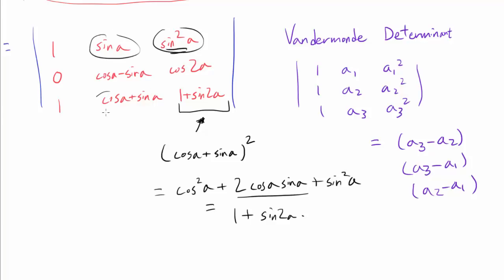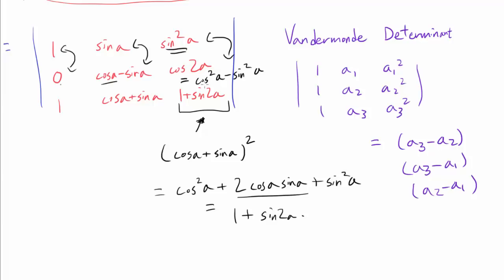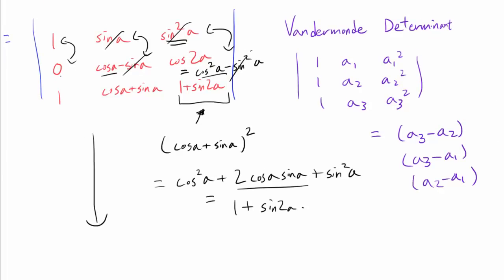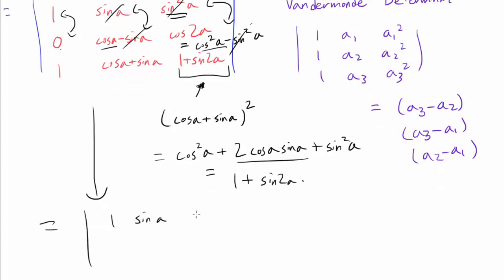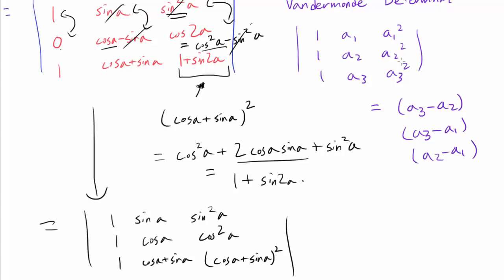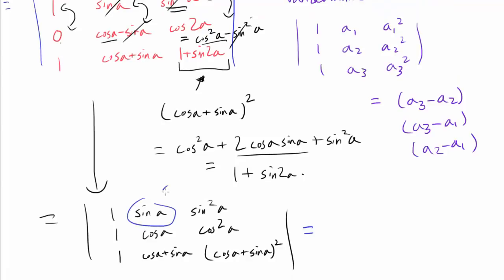We can make a Vandermonde determinant out of this, since we have something, something squared in the pattern we need. Let's think about how to modify the second row. We see that cos(2a) = cos²(a) − sin²(a), so when we add the first and second rows, sin(a) and sin²(a) cancel, giving us 1, cos(a), cos²(a). So adding the first row to the second row, we get: row 1: 1, sin(a), sin²(a); row 2: 1, cos(a), cos²(a); row 3: 1, cos(a) + sin(a), (cos(a) + sin(a))². Here we have the Vandermonde determinant, with a₁ = sin(a), a₂ = cos(a), and a₃ = cos(a) + sin(a).